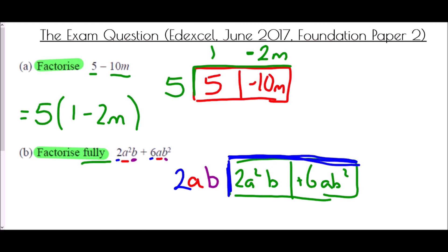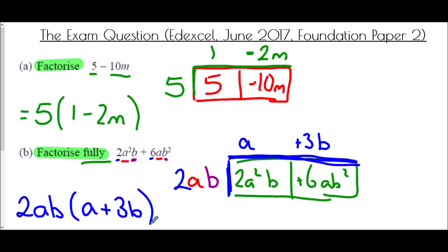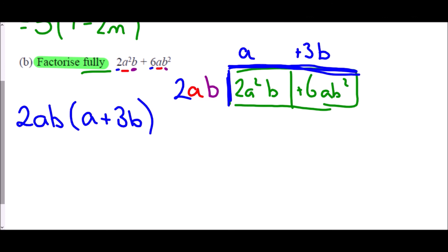Dividing each term by 2ab: 2a²b ÷ 2ab = a, and 6ab² ÷ 2ab = 3b. Fully factorized answer: 2ab(a + 3b). If you missed one factor you would still get a mark, but because it says 'fully' you must take out as many factors as possible.